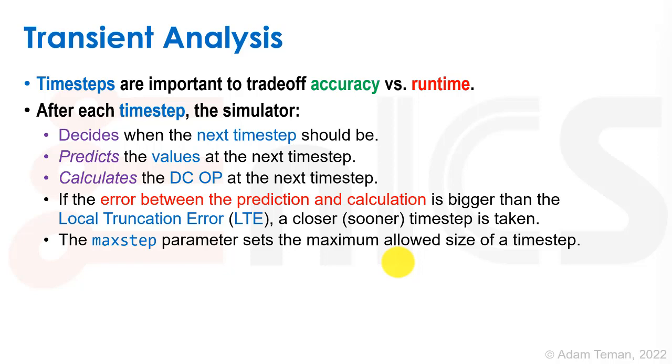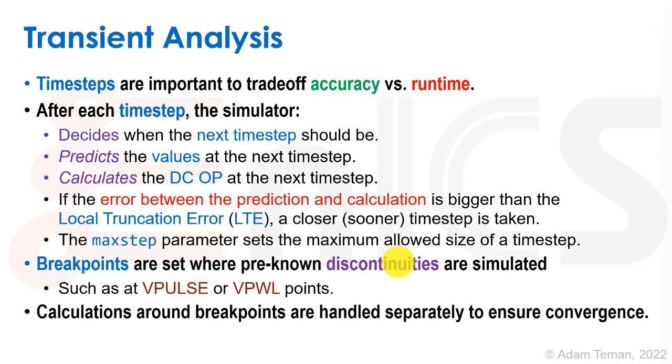If it's still too big, then we're going to take an even closer time step. So we're going to have a lot of time steps over where we have large changes. Finally, there's something called the max step parameter, and that's going to set the maximum allowed size of a time step, so we don't take too big of steps even though we have something that may not seem to have been changing at all.